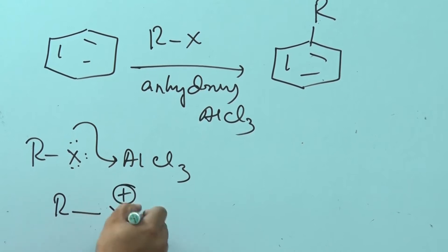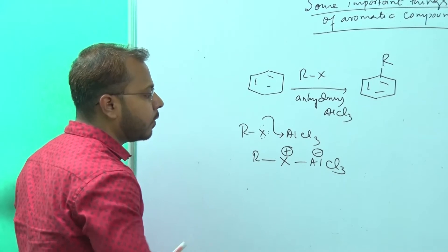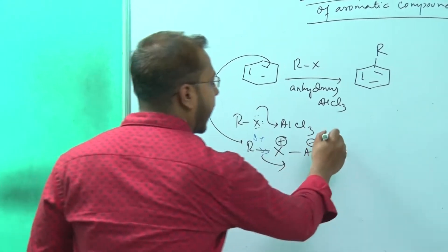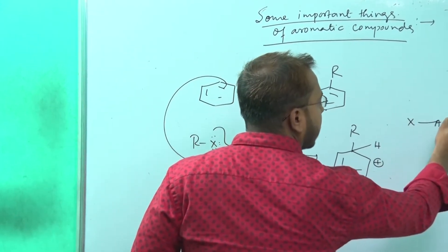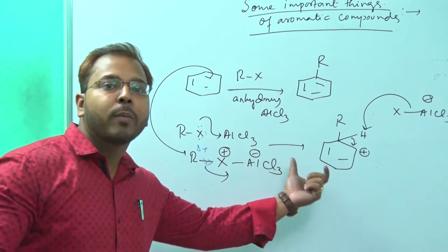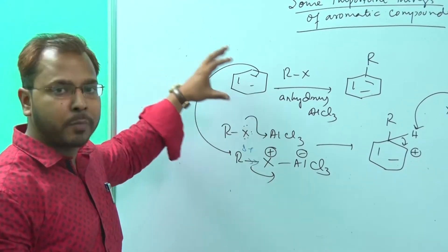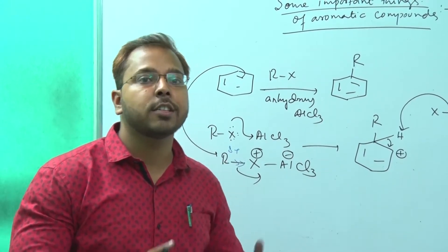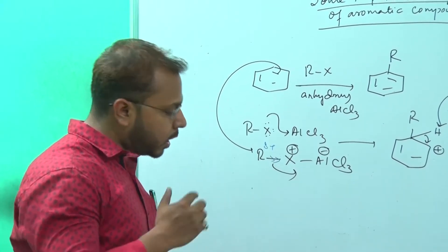AlCl3 acts as an acceptor, so it forms RX·AlCl3. The X attracts electrons from the R group, developing a partial positive charge on R. To neutralize this partial positive charge, the benzene ring attacks and forms the R-attached intermediate. Then X⁻ attacks to regain aromaticity, because benzene ring follows Hückel's rule (4n+2 π electrons). HCl is released and the aromatic product is obtained. This is known as Friedel-Crafts alkylation.